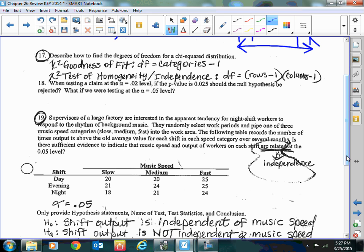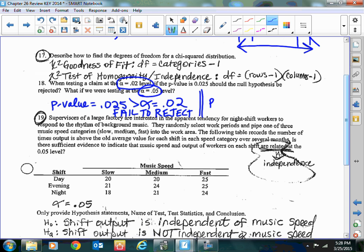Number 18: When testing the claim at an alpha of 0.02 level - so that's your size of your rejection region - and the p-value is 0.025, should the null hypothesis be rejected? This is basic. If your p-value of 0.025 is greater than your alpha, you will fail to reject. Your p-value when the null hypothesis is low - so if your p-value is low, the null hypothesis has to go. Second question: What if we were testing the alpha of 0.05? Well, in that case, your p-value of 0.025 would be less than alpha, and your p-value would be low. And if your p-value is low, then your null hypothesis has to go.